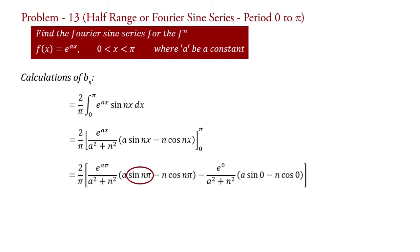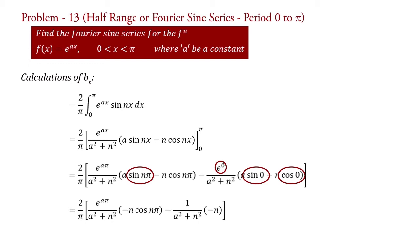Here sin(nπ) = 0, sin(0) = 0, cos(0) = 1, and e^0 = 1. Therefore, bn = (2/π) · { e^(aπ) / (a² + n²) · (−n cos(nπ)) − 1/(a² + n²) }.